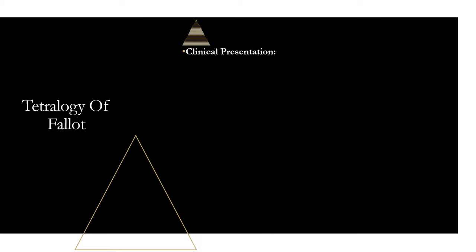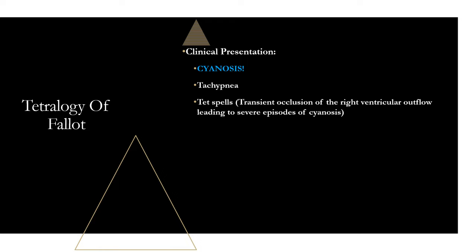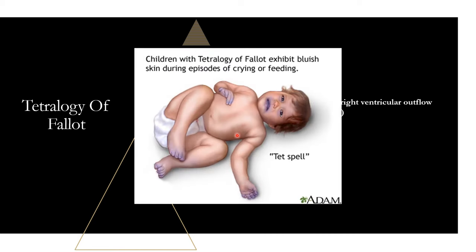For clinical presentation of Tetralogy of Fallot, the most important thing to know is TET spells. First, these patients are cyanotic — non-oxygenated blood gets into systemic circulation, so their skin and mucous membranes will be blue. TET spells are transient occlusions of the right ventricular outflow leading to severe sudden episodes of cyanosis. They normally happen when children become agitated and are crying, but can happen in older children during exertion — exercising or playing sports — and they suddenly turn completely blue.